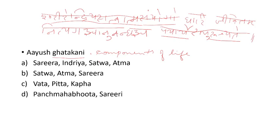The question is about the components of life, so we go for the options. The first option is Sharira Indriya Sattva Atma. It is very well stated in the sloka. If we remember the sloka, we get the answer directly: Sharira Indriya Sattva Atma Samyoga — that is Ayu. So the composition of Ayu, the answer is this. But we have to check the other options as well to confirm properly. We should not mark the answer just by finding the first correct one; we have to go through all four options.